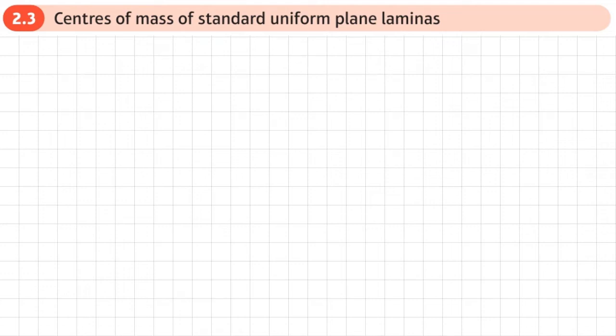This is the third section of chapter two, and this section is about the centers of mass of standard uniform plane laminas. There are certain shapes where we don't need to work out what the center of mass is — they've been worked out already, so we can use standard results to help us solve more challenging problems.